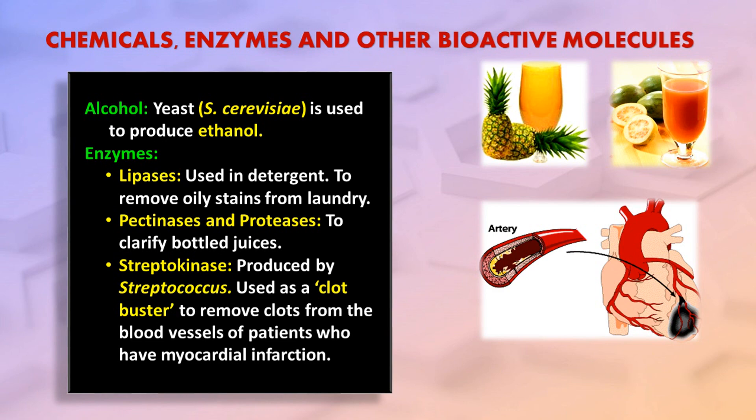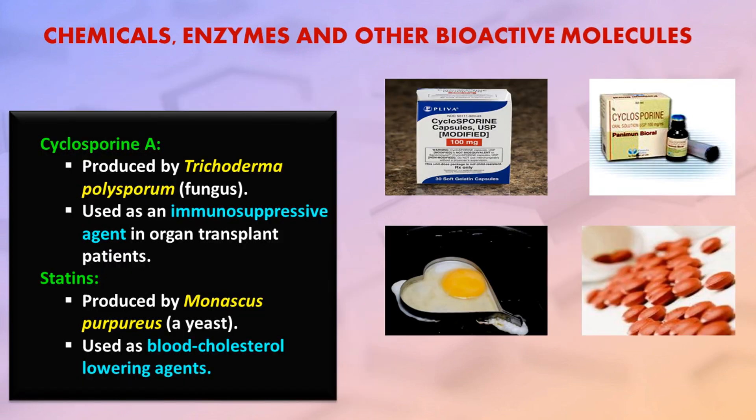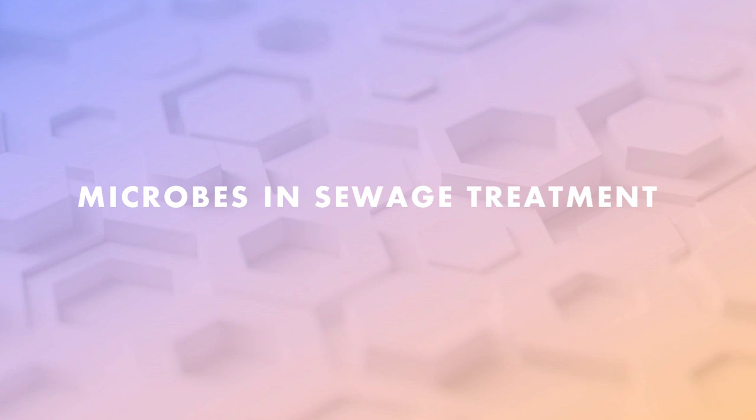The fungus Trichoderma polysporum produces cyclosporine, which is used as an immunosuppressive agent in organ transplant patients. The yeast Monascus purpureus produces statins, which are used as blood cholesterol-lowering agents.